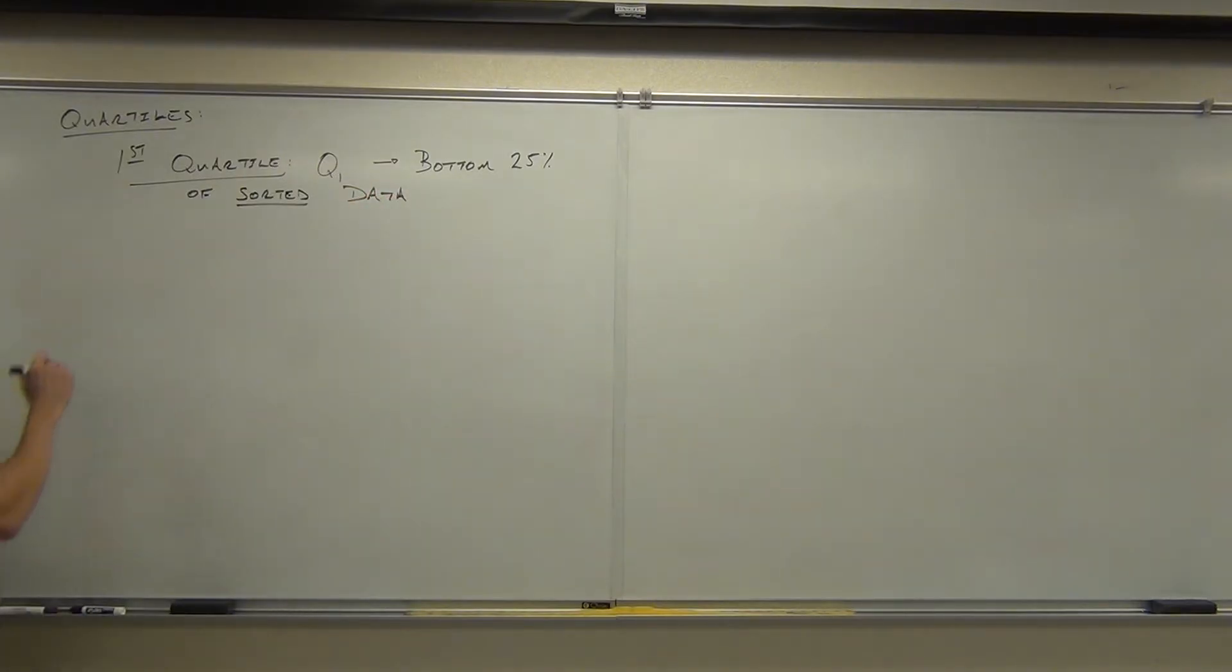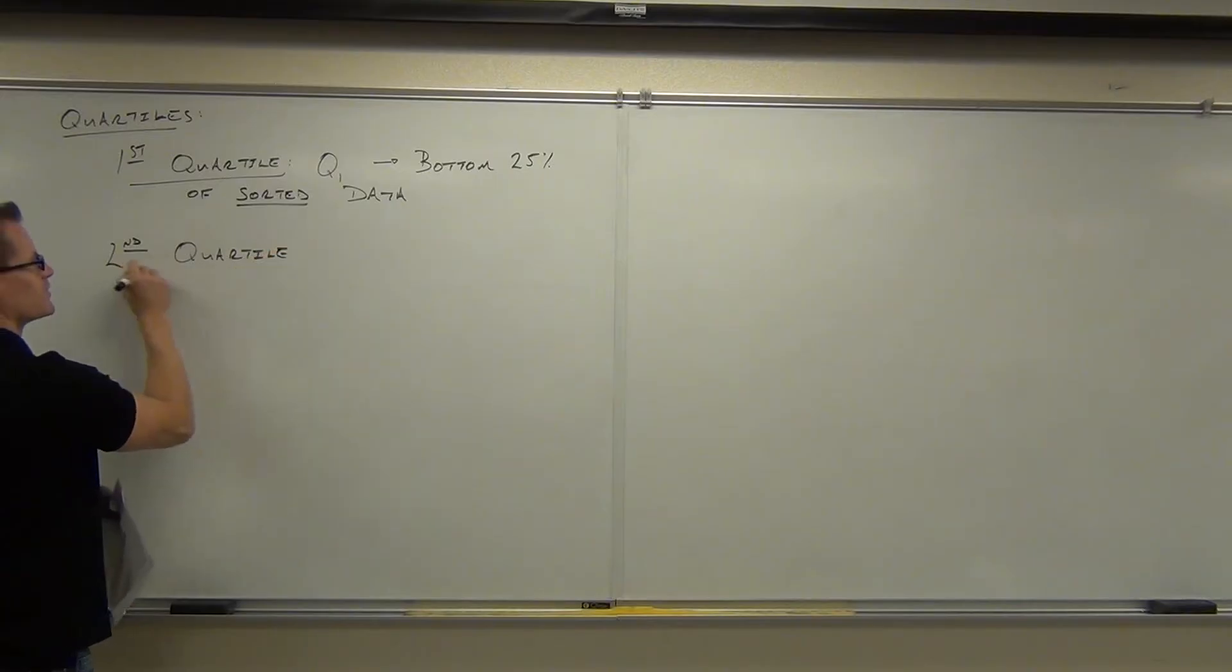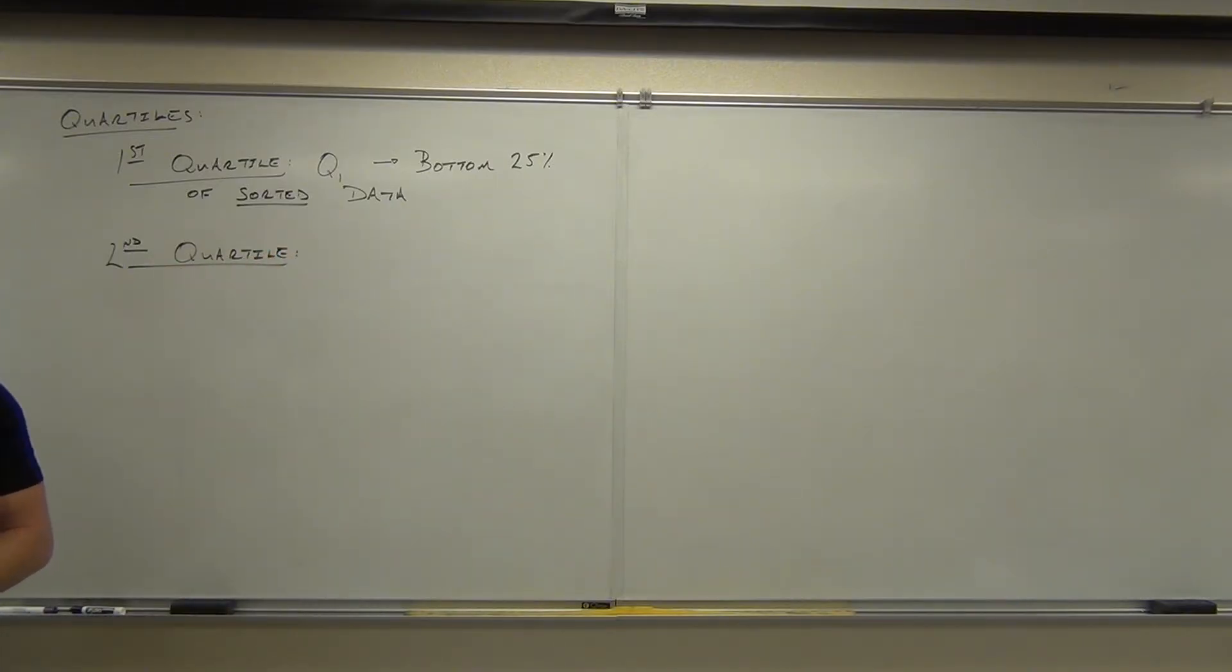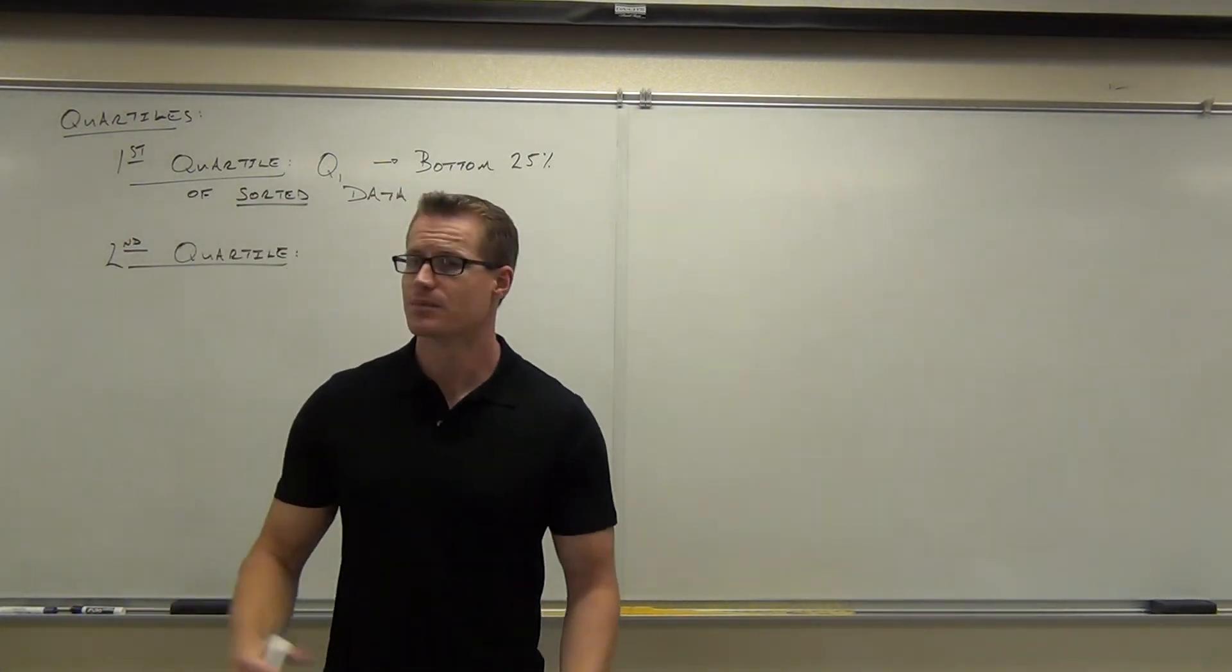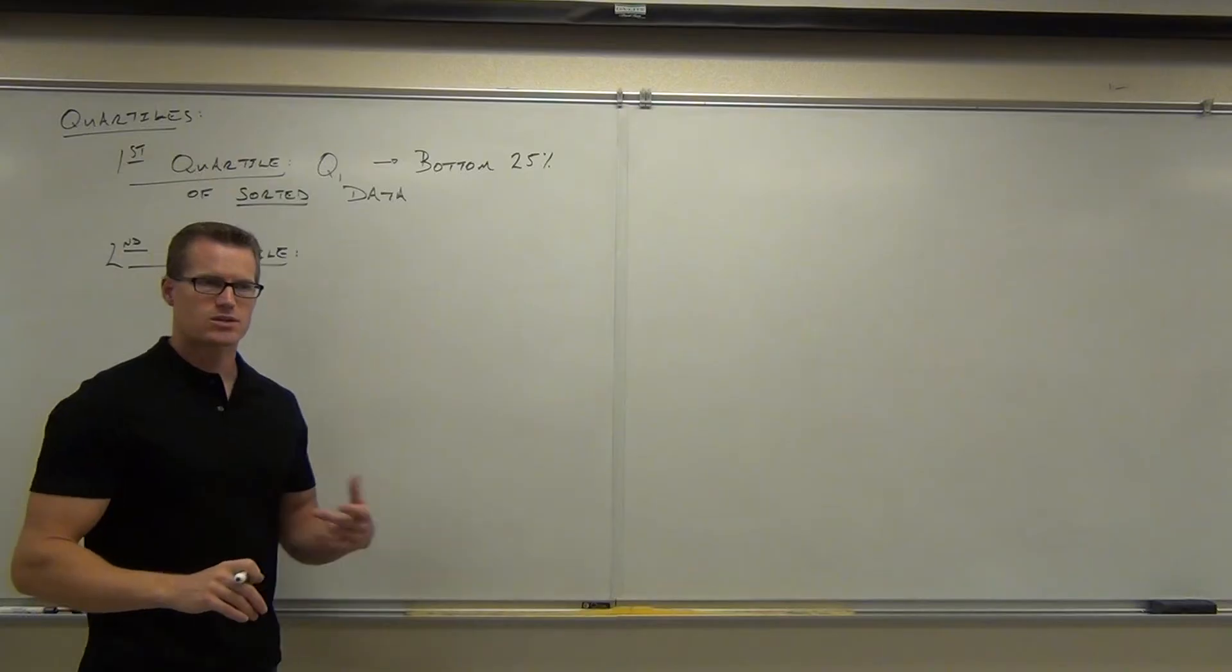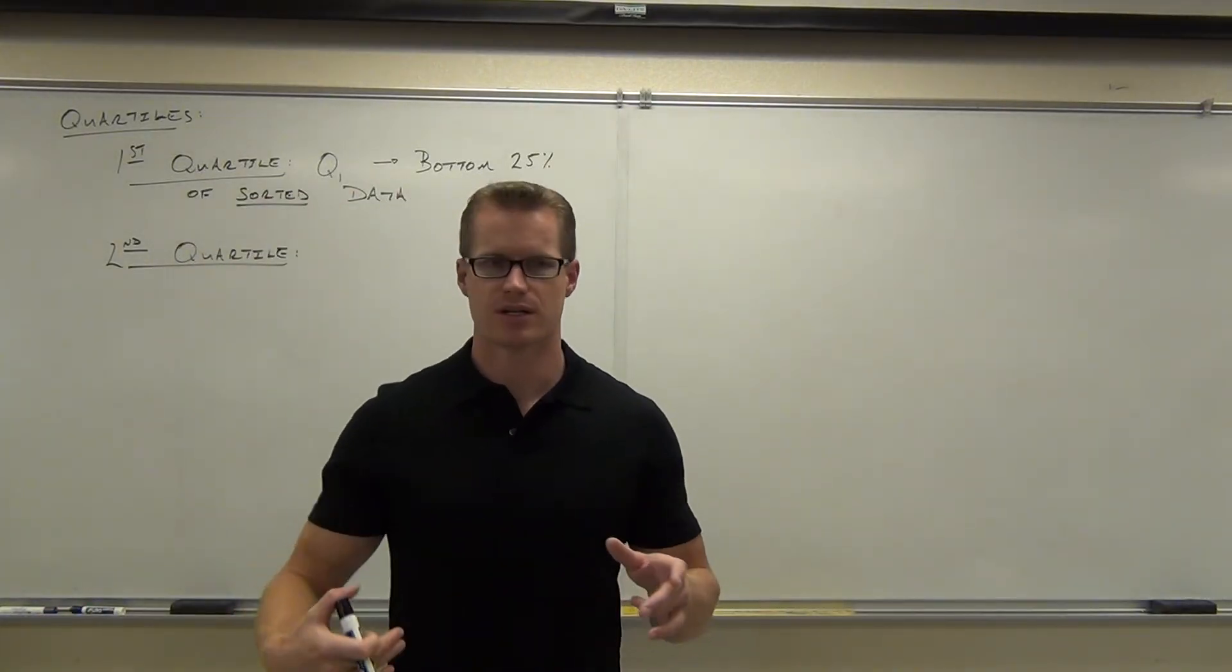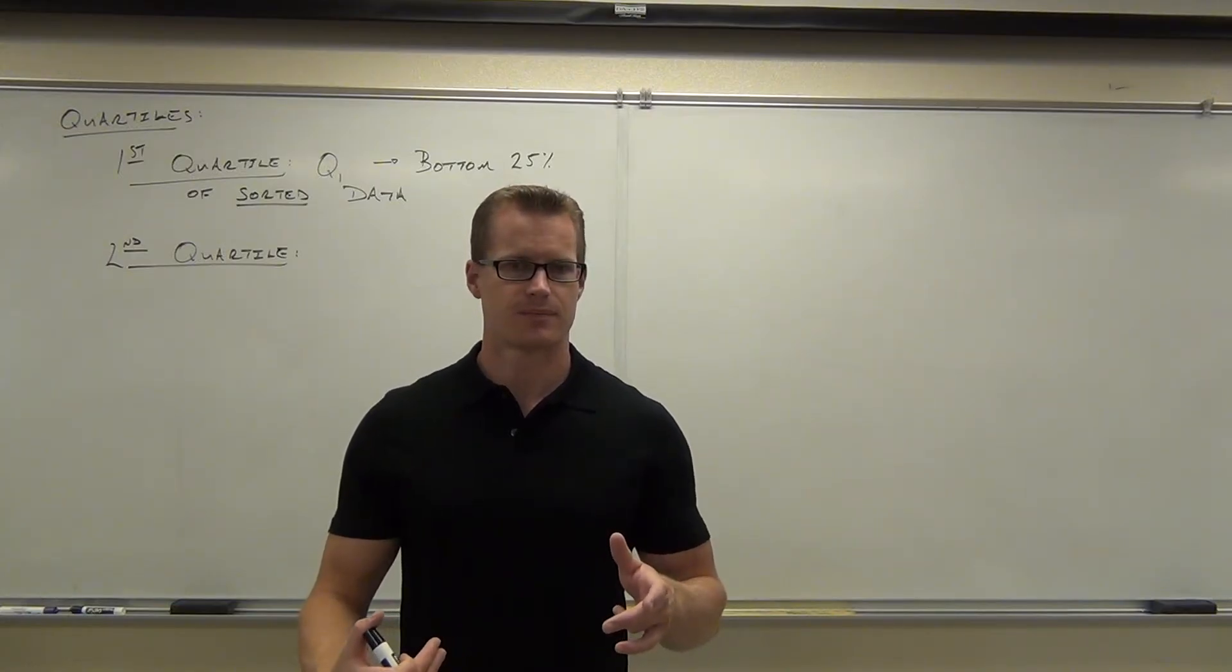Okay. Hey, what do you think the second quartile is going to be? Don't all speak at once. It's really annoying. You know, you all start talking at the same time. What do you suppose the second quartile is going to be? The first one is the bottom 25%. What's the second one? Yeah, the bottom 50%. Can you tell me what other value we already have that represents the bottom 50% of a data set that's in order? Median. The median.